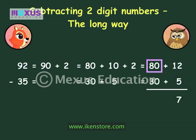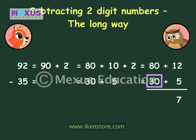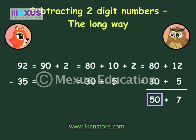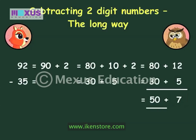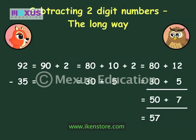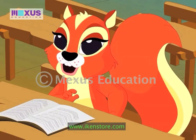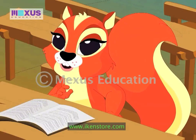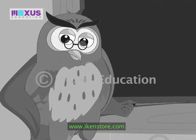And 80 minus 30 is 50. That makes our answer equal to 50 plus 7. That is 57. There you go. Oh, now I get it. Thank you so much, sir.